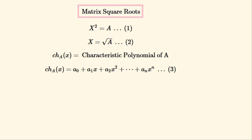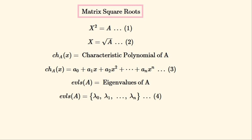This is the characteristic polynomial of the matrix A written out in polynomial notation. We'll define this function to be a list of all of the eigenvalues of A, which are the roots of the characteristic polynomial of A. This list uses curly brackets like a set, but it isn't a set because some eigenvalues can appear twice. It isn't a vector either because the order isn't important.